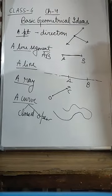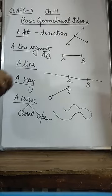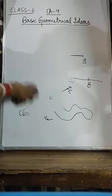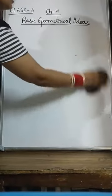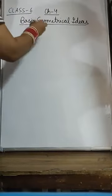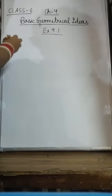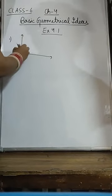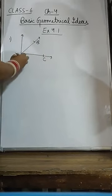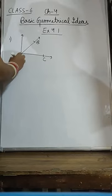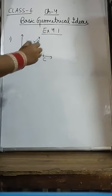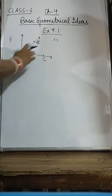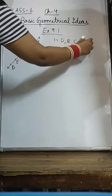So now we are proceeding to exercise 4.1. In question number 1 there is a figure given. In the first part they are asking how many points are there. You can see O, B, C, D, E — there are 5 points: O, B, C, D, E.